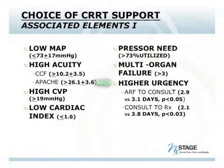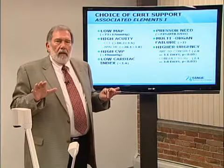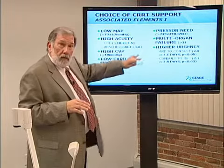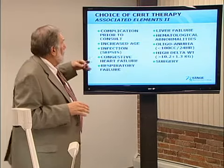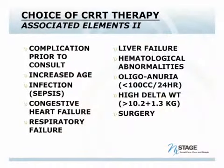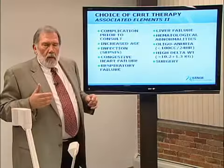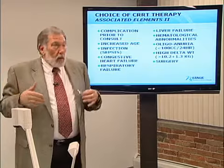Multi-organ failure and higher urgency all tend to give a better response with continuous therapy. Looking further at complications — the whole picture of sepsis, the weight of the patient, and the delta weight from pre-morbid to morbid conditions — all drive the choice towards continuous therapy and away from intermittent therapy.